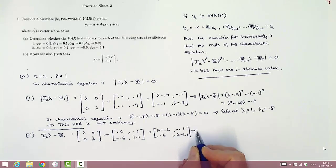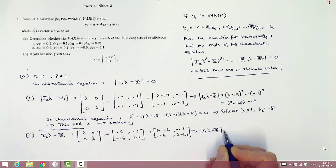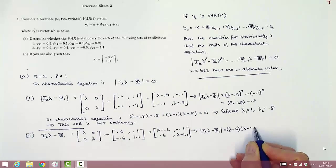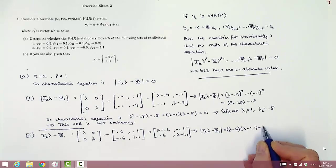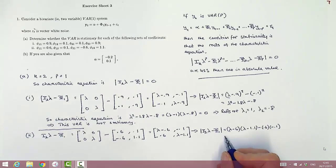Then we need the determinant of that, which is going to be lambda minus 0.6 times lambda minus 1.1, minus 0.6 times minus 0.1.